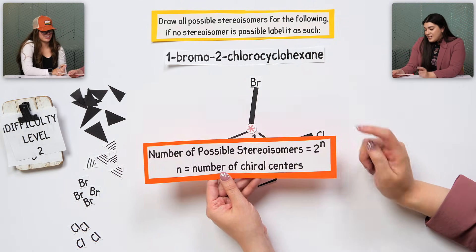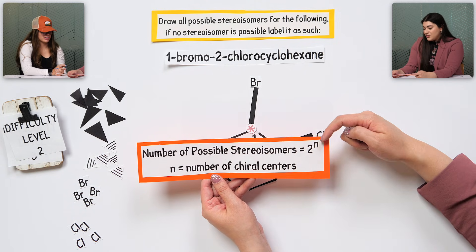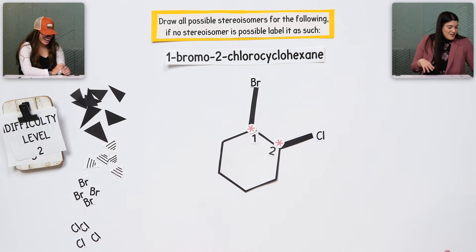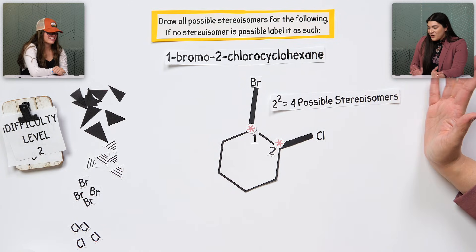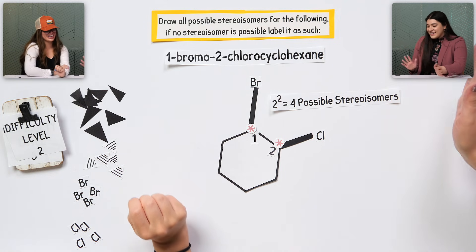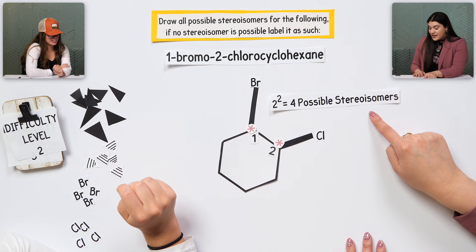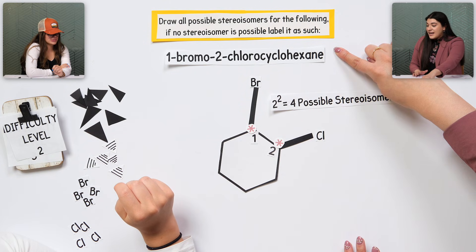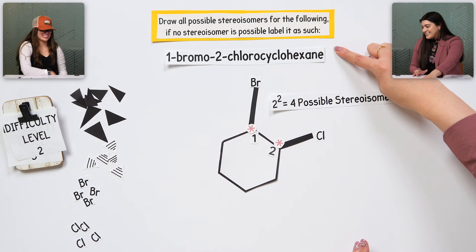Now, going back to this, if we have two chiral centers, so that's N. So, two squared. Four. So, I know that four is the possible amount of stereoisomers. The question is asking us to draw all of them. So, how do we do that?